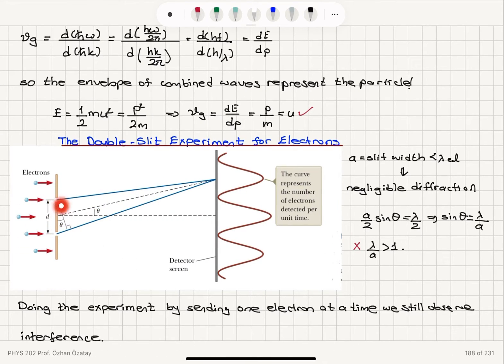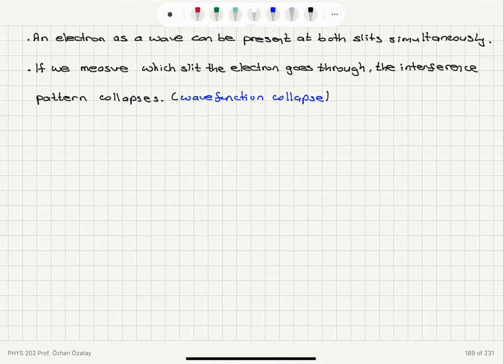So a single electron, but its wave character can appear on both slits, and we can observe the interference.